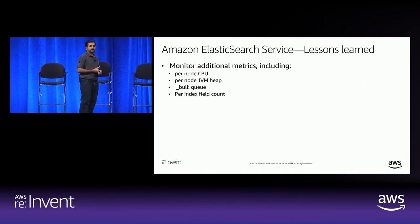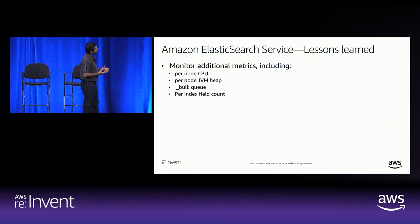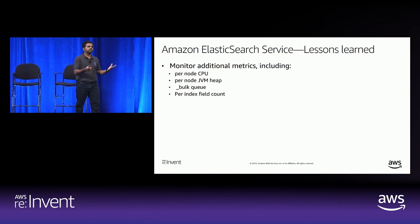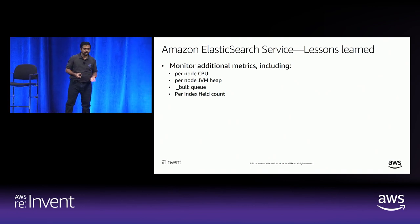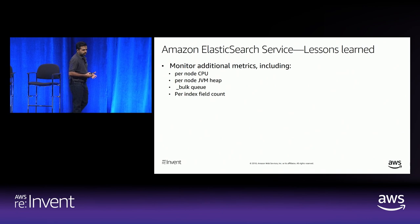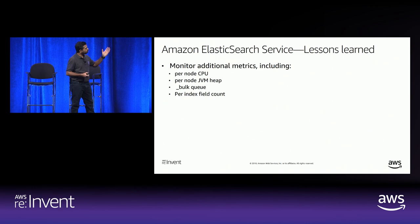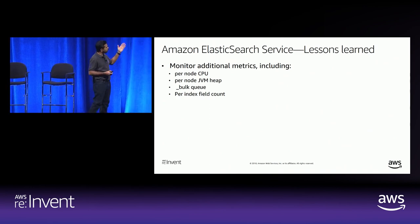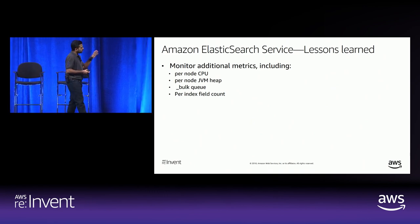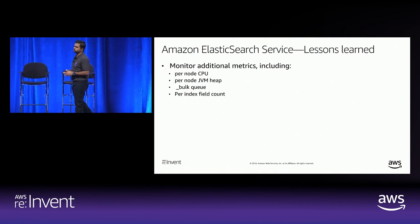Some more lessons learned around Elasticsearch Service. Amazon Elasticsearch Service now has a rich set of metrics by default — this is a more recent addition. Previously, we created our own Lambda function to get per-node CPU, per-node JVM, bulk queue size, and per-index field count. But to my knowledge, all of this is now available by default in Elasticsearch CloudWatch Metrics.